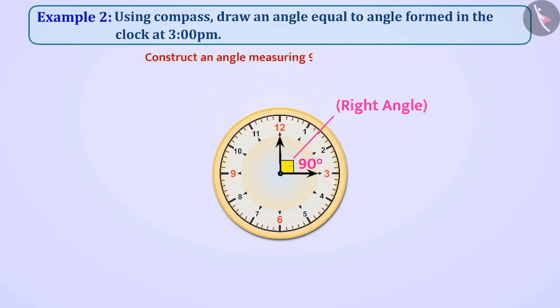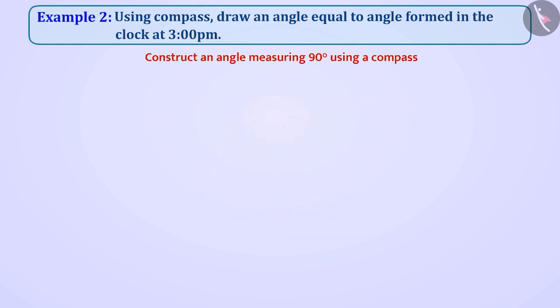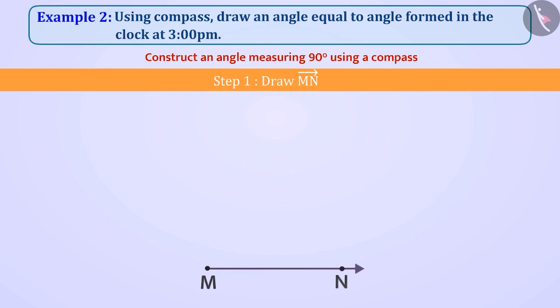That means we have to construct an angle measuring 90 degrees using a compass. So, let's see how we can make it. Step 1. We will draw a line MN.